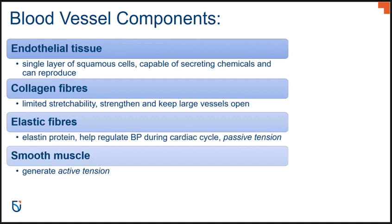Smooth muscle cells are found in the wall of all segments of the vascular system except for capillaries — capillaries don't have muscle within their walls. Smooth muscle is involuntary. The numerous smooth muscle cells present within vessel walls allow for control of the movement of blood and how much blood flows through our vascular system. It is the smooth muscle cells that exert an active tension in these vessels when they contract.